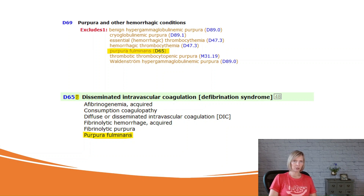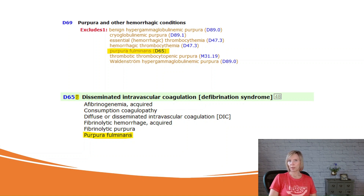Let me give you an example. Category D69, purpura and other hemorrhagic conditions, has an EXCLUDES-1 note for purpura fulminans, which is coded as D65. Now if you take a look at code D65, we'll see that it is assigned for multiple different conditions. But here's the thing — the EXCLUDES-1 note from category D69 only applies to the condition purpura fulminans and not to all the other conditions that code to D65.